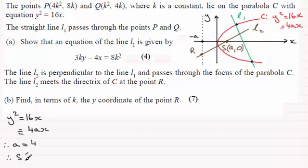And that means that therefore the focus S, which has coordinates (a, 0), is now (4, 0). And with that, I should start to be able to work towards getting the equation of L2. I need to get its gradient though, and I know that it's perpendicular to L1.